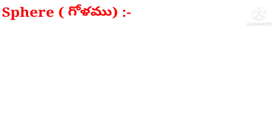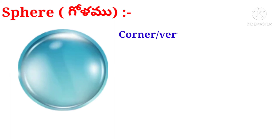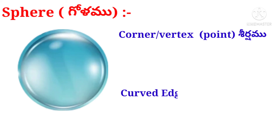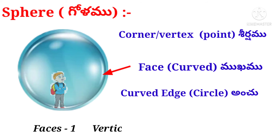Now let us take the picture of a sphere. Observe that there are no corners and no curved edges, only one curved face. Suppose a boy entered a room in the shape of a sphere. He observed a curved face on all sides — so faces equal one. No corners, so vertices equal zero. No edges, so curved edges equal zero.